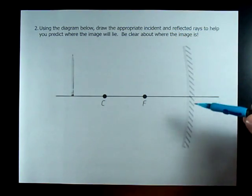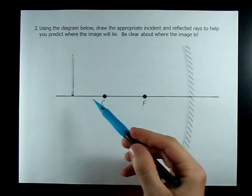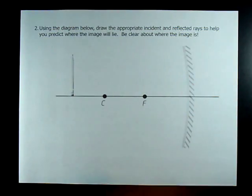Ray diagram for a concave mirror when the object is past C. You know what to do.